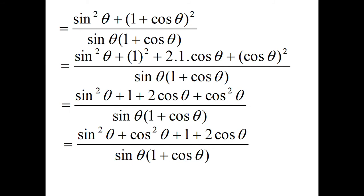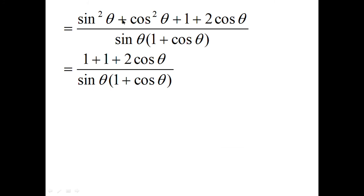Now making the simplified calculation: sine squared theta plus 1 plus 2 cos theta plus cos squared theta is in the numerator. The sine squared theta and cos squared theta terms are arranged together. Since sine squared plus cos squared equals 1, we write 1 for that, and 1 plus 2 cos theta remains. So the numerator becomes 1 plus 1 plus 2 cos theta.